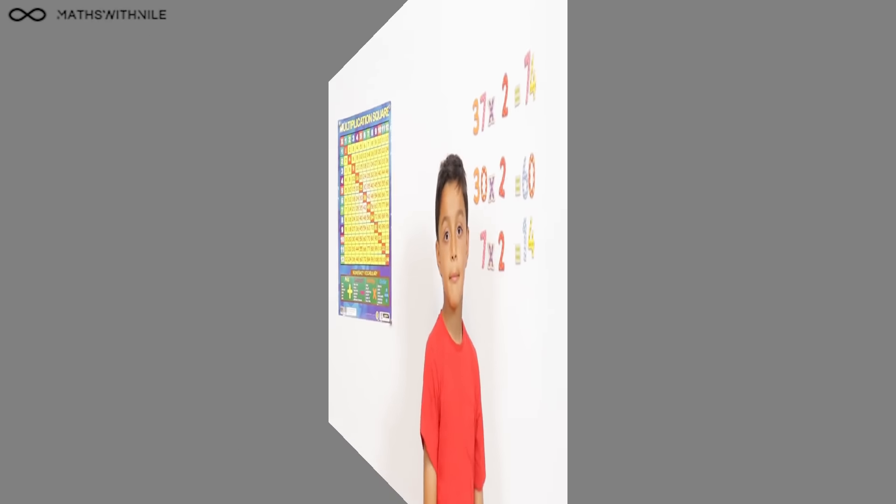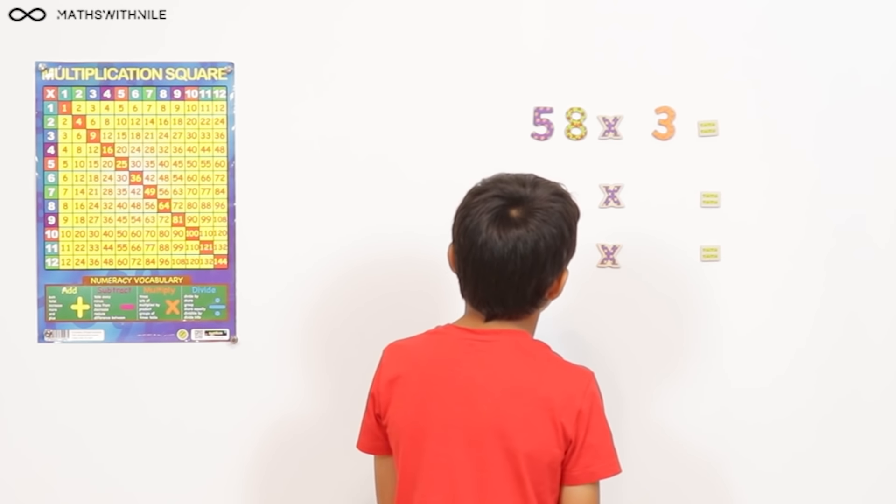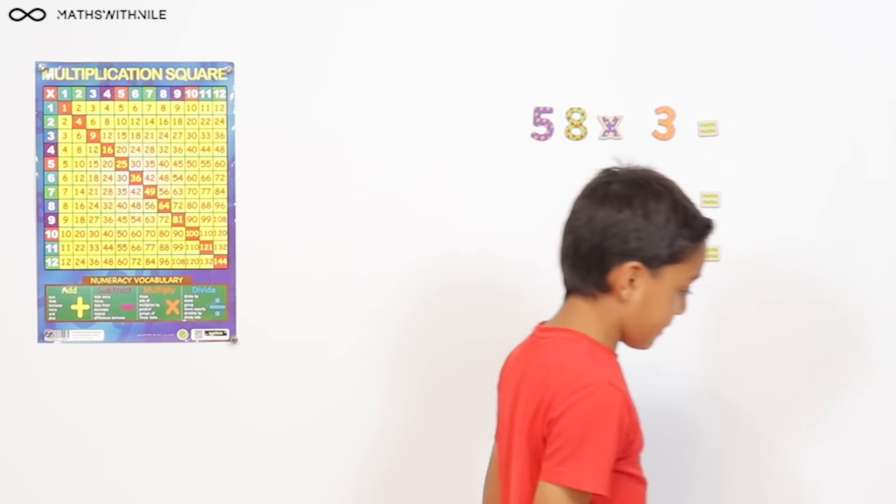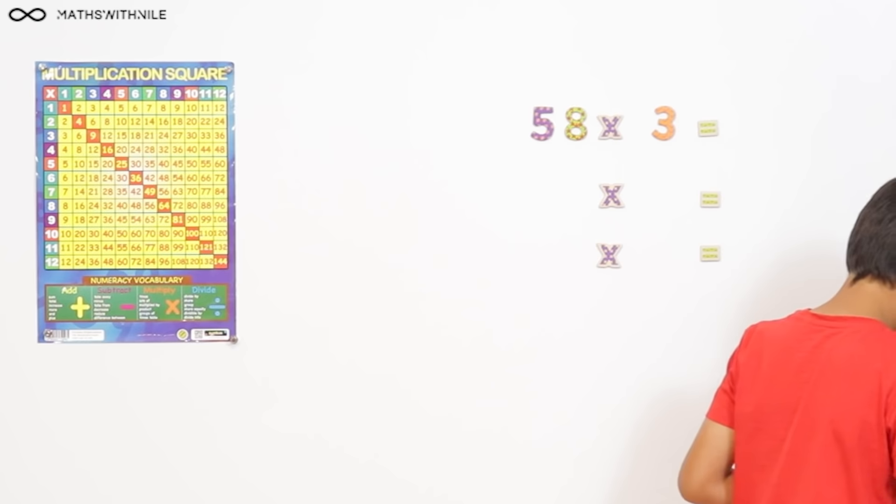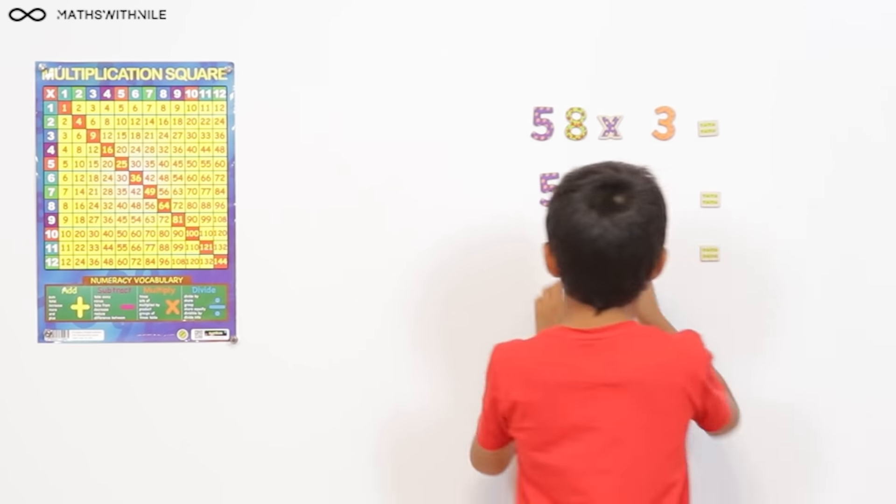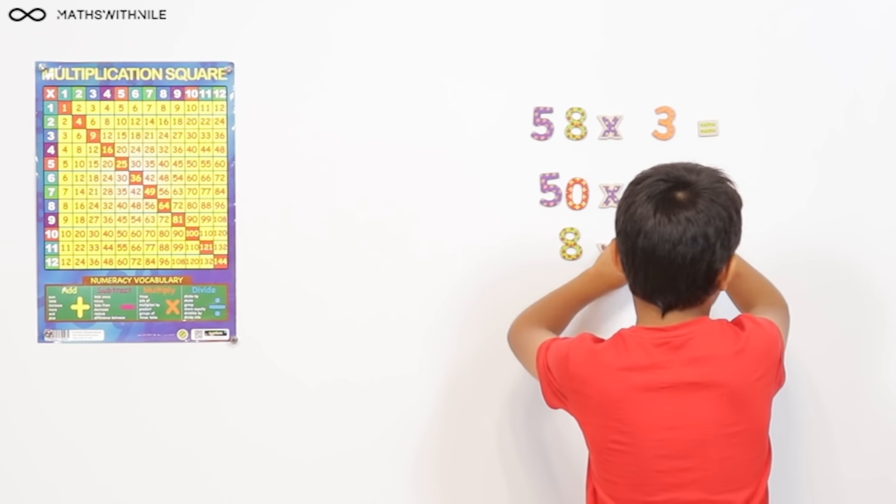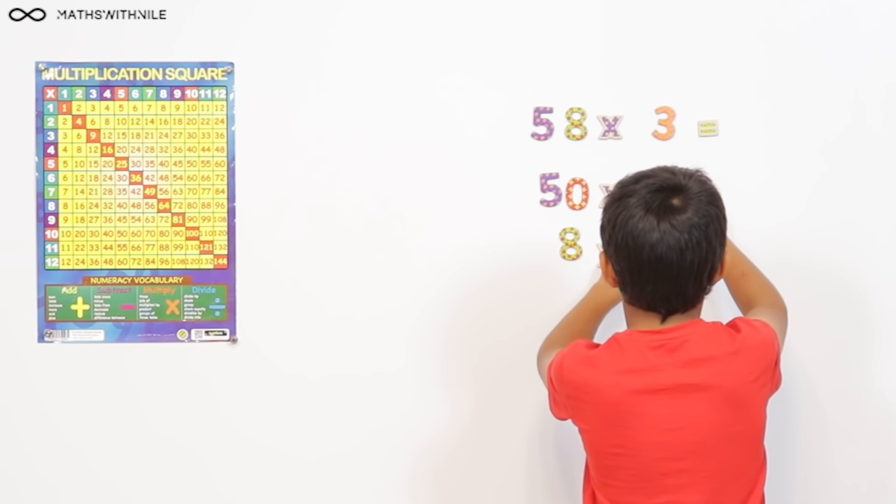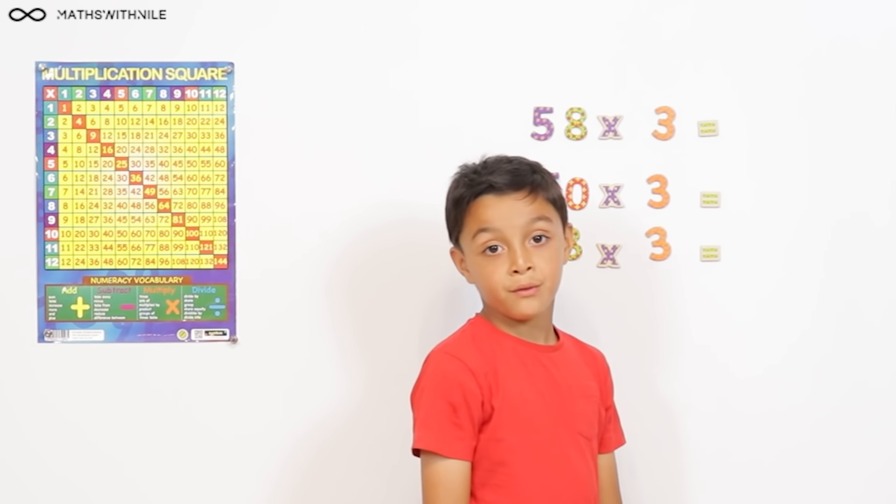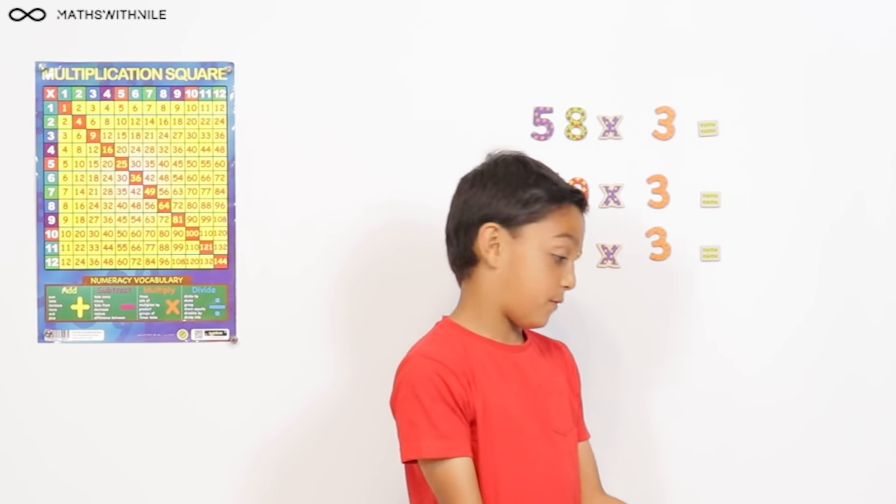Okay. What question are we doing now? 58 times 3. Okay. So, I'll split my 50 and my 8. So, 50 and an 8. Okay, so you split 58 into 50 and 8. And then 3s. Times the numbers by 3. Yeah. So, 50 times 3. Well, 5 times 3 is 15. And then 15 add a 0 is 150. Very good, Niall.